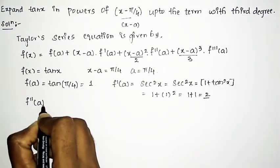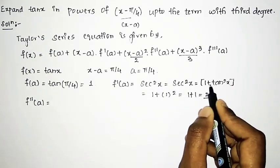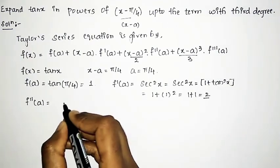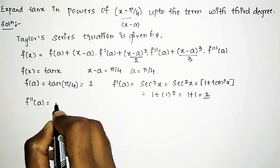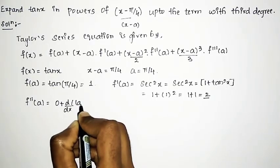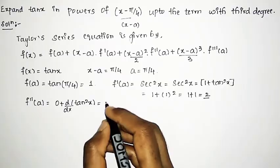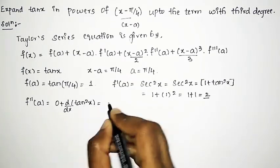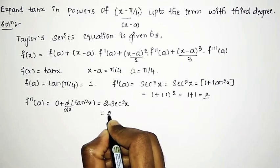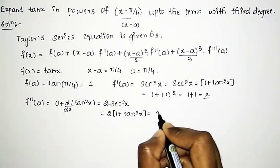Next we need to find f''(a) by again differentiating sec²x, which we write as (1 + tan²x). Differentiating: the derivative of 1 is 0, and the derivative of tan²x is 2·tan x·sec²x, which gives 2·tan x·(1 + tan²x). Substituting a = π/4 with tan(π/4) = 1: f''(a) = 2·1·2 = 4. Wait — simplifying: 2·(1 + tan²x) evaluated gives f''(a) = 2·2 = 4, so f''(a) = 8.